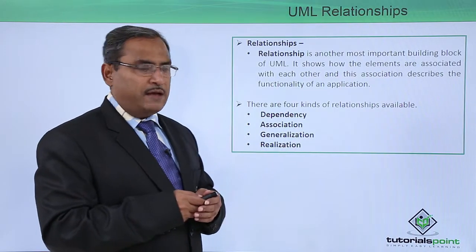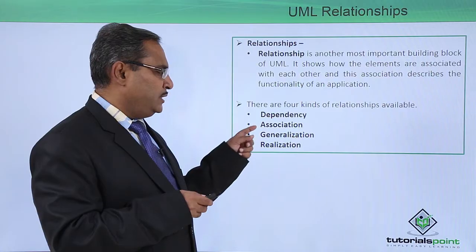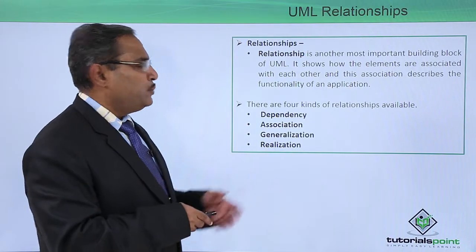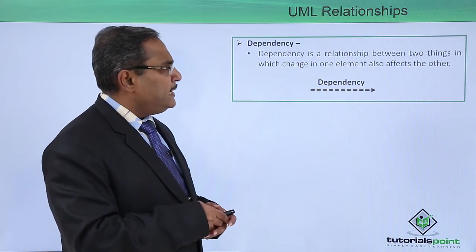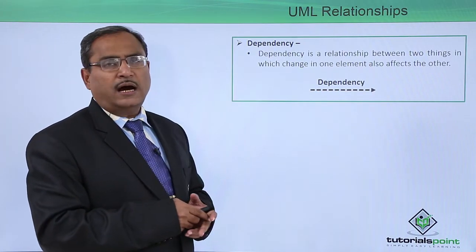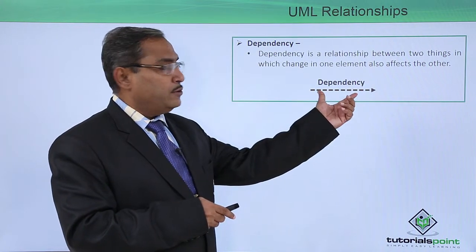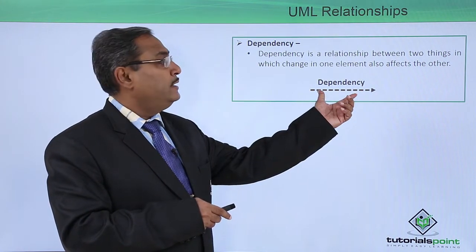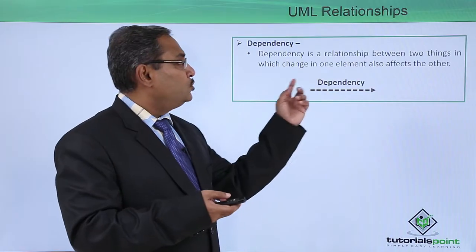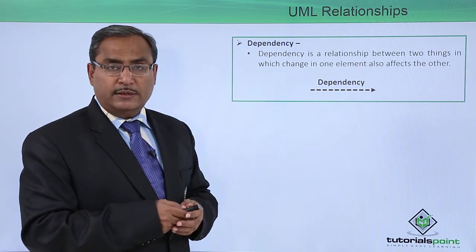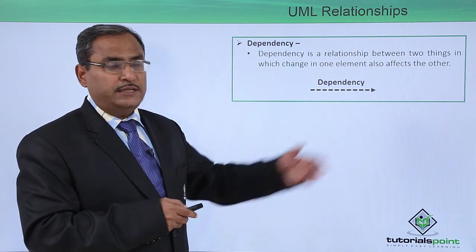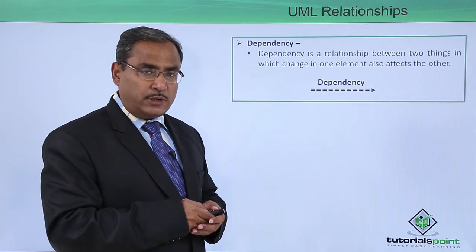There are four kinds of relationships available: dependency, association, generalization, and realization. Dependency is a relationship between two things in which a change in one element also affects the other. That dependency relationship is denoted by a dotted arrow-headed line, where two UML things are there and change in one thing will also reflect a change in the other thing.